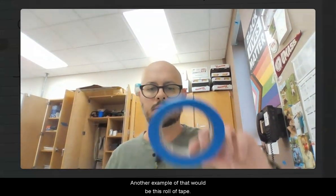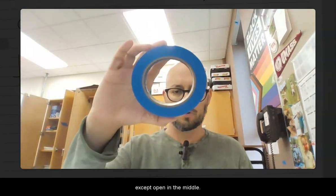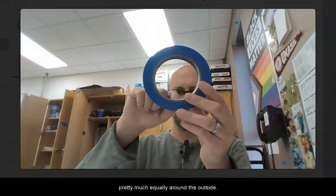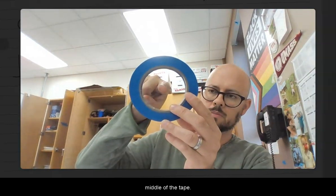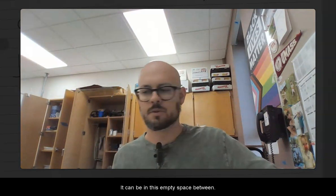Another example of that would be this roll of tape. So this roll of tape has the same shape as the puck, except it's open in the middle. Now all of the mass is distributed pretty much equally around the outside. And so you can use symmetry, and you can say the center of mass is also right in the middle of the tape. So center of mass doesn't have to be where there is stuff. It can be in this empty space between.